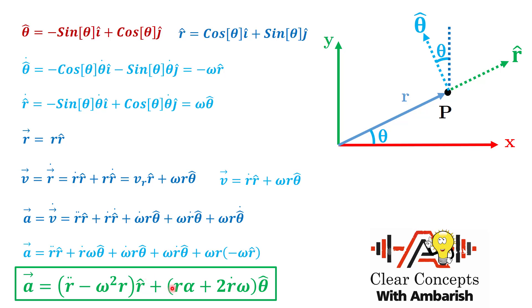The net radial acceleration is r double dot minus the centripetal term. In the tangential direction, besides r alpha (from plain circular motion), there's one additional term: 2 r dot omega times theta cap. This term is called the Coriolis acceleration. It arises because of the radial velocity r dot — specifically, twice the radial velocity times omega — and it acts in the tangential direction.